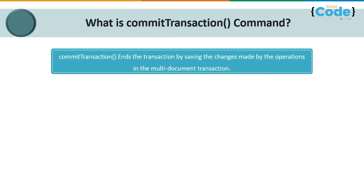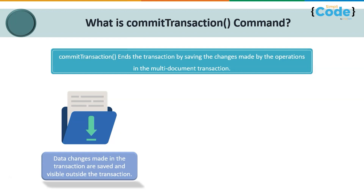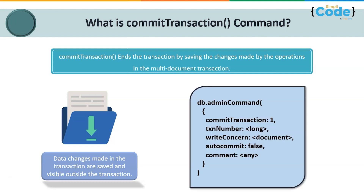The commit transaction command ends the transaction by saving the changes made by operations in the multi-document transaction — essentially the opposite of abort transaction. It ensures that changes are saved and the transaction ends. You must run it against the admin database using db.adminCommand. The syntax is similar to abort transaction, but with the commitTransaction keyword set to 1, along with the transaction number, write concern, autocommit, and comment fields.